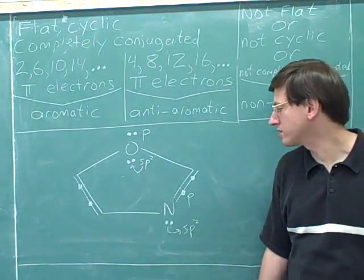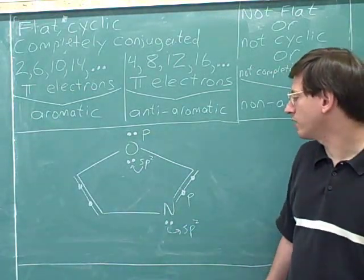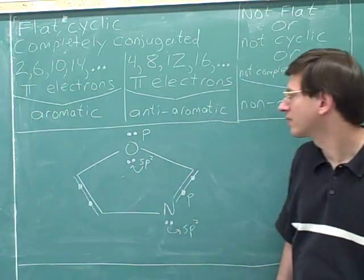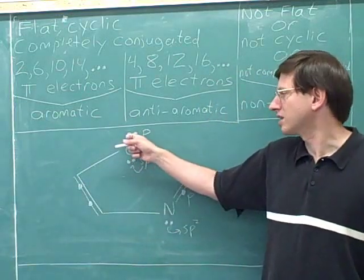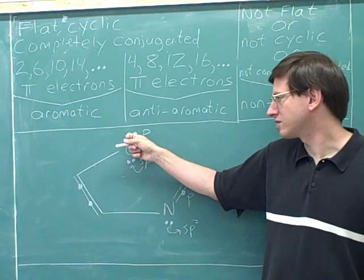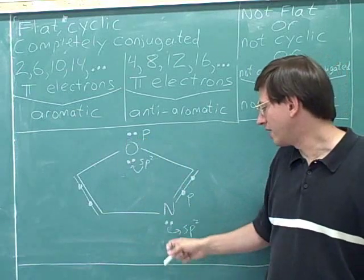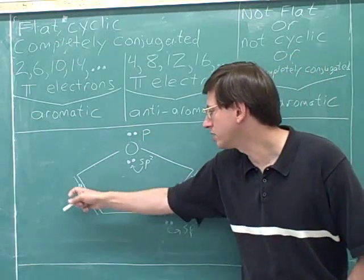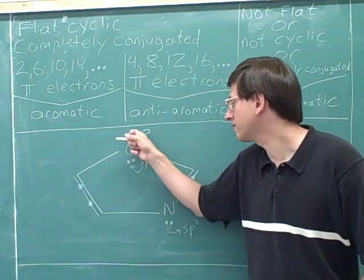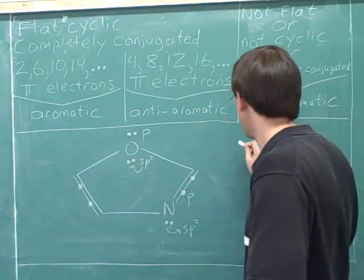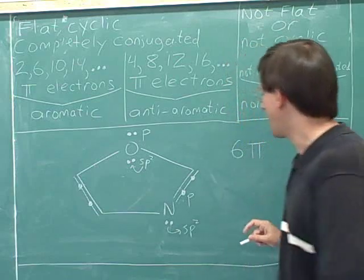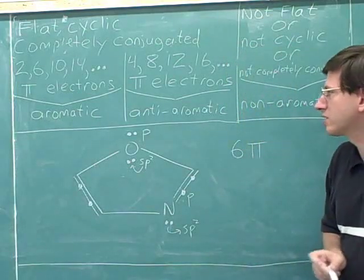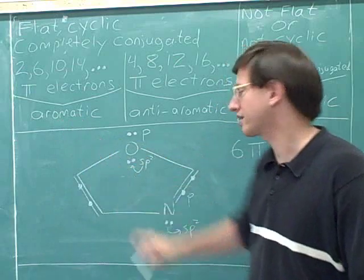That means this lone pair does not count as pi electrons because it's not in a p orbital. So how many pi electrons do we have total? We have four electrons in the pi bonds. This oxygen's lone pair also counts as pi electrons, and the nitrogen's lone pair does not count as pi electrons. So in total we have six pi electrons — that's how many electrons are in the overlapping p orbitals. So this molecule is aromatic.